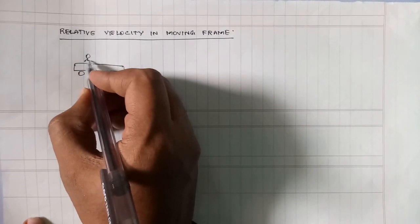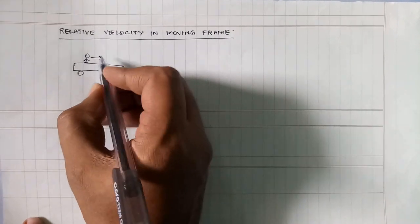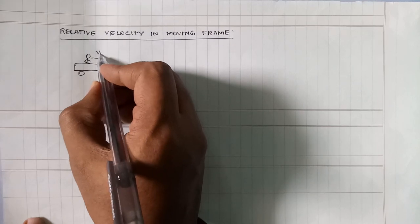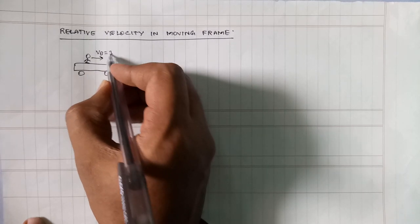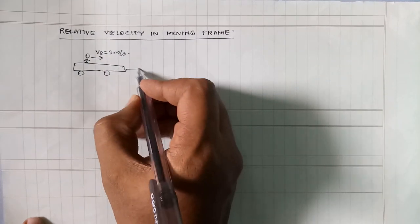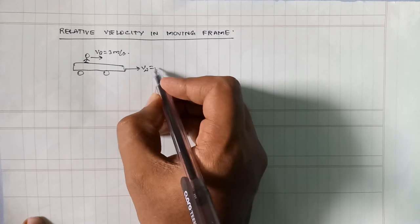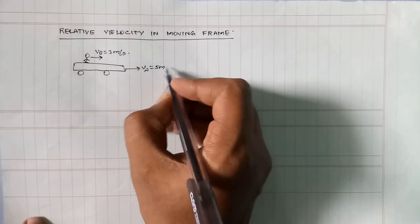If the velocity of B is equal to 3 meters per second, and the moving frame velocity equals that of A, it will be 5 meters per second.